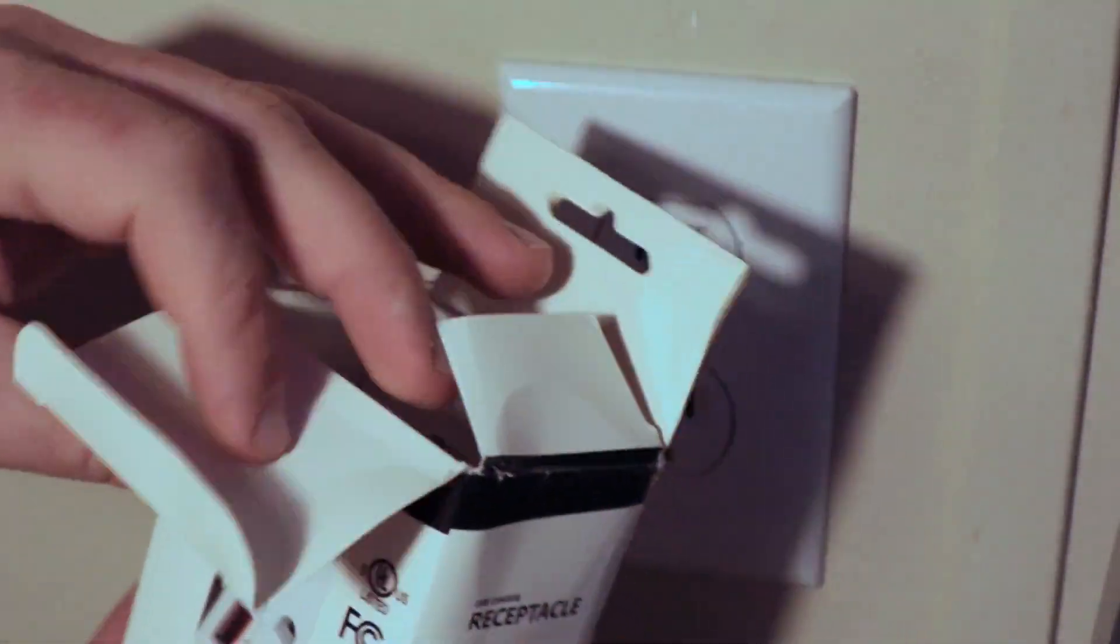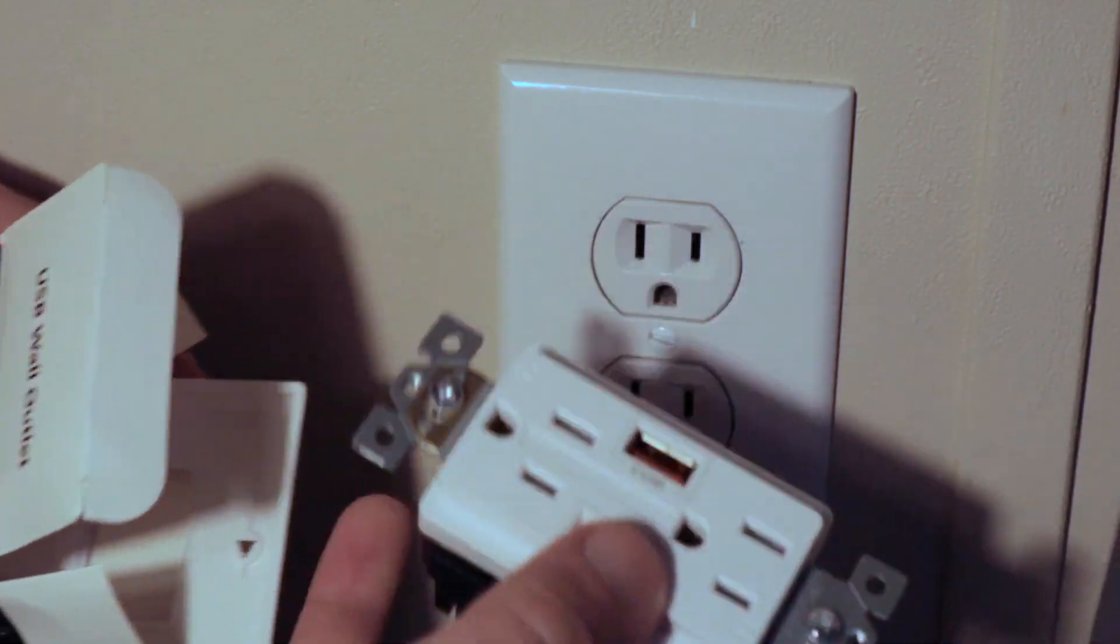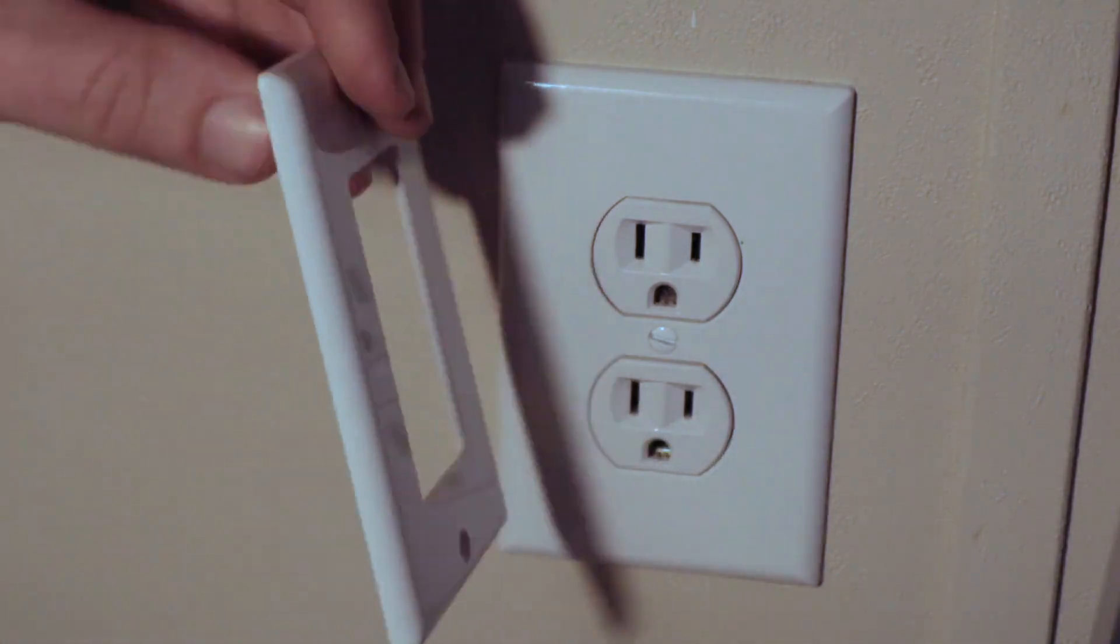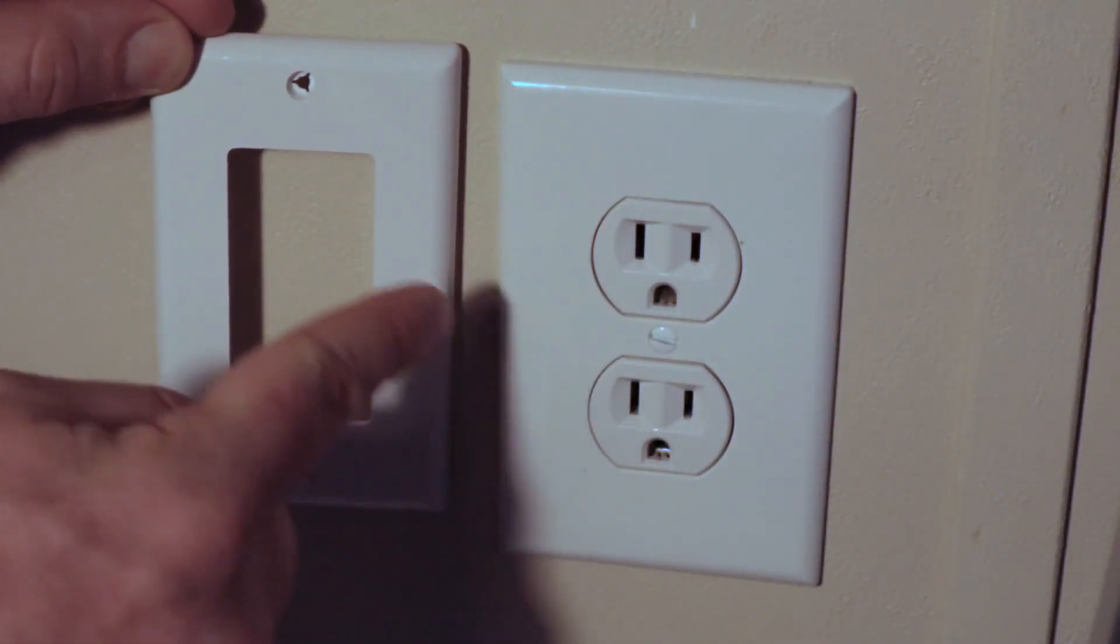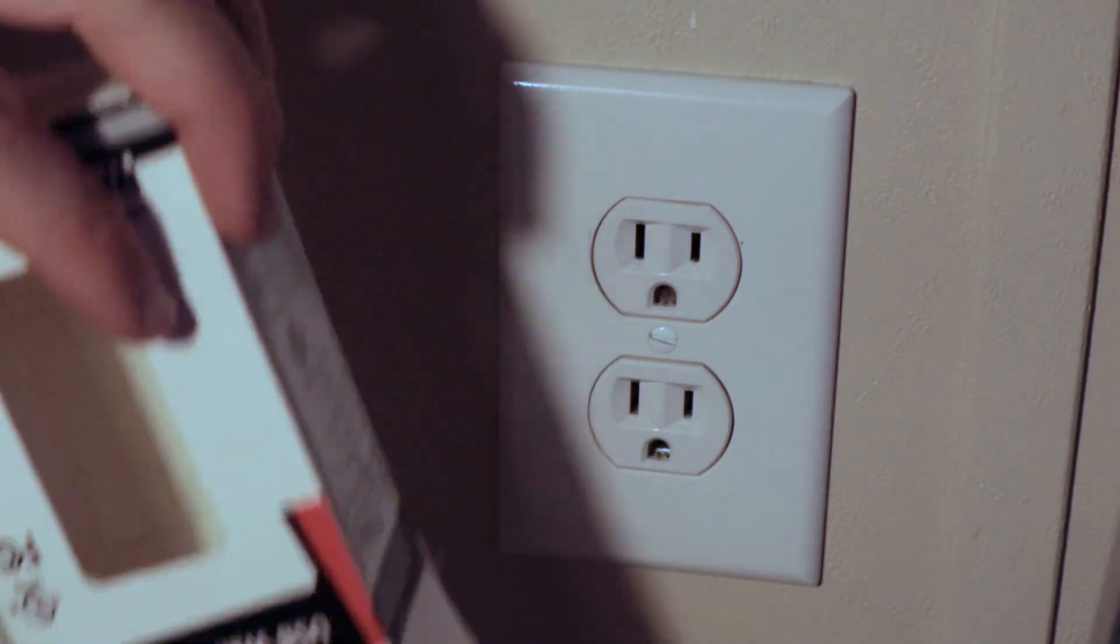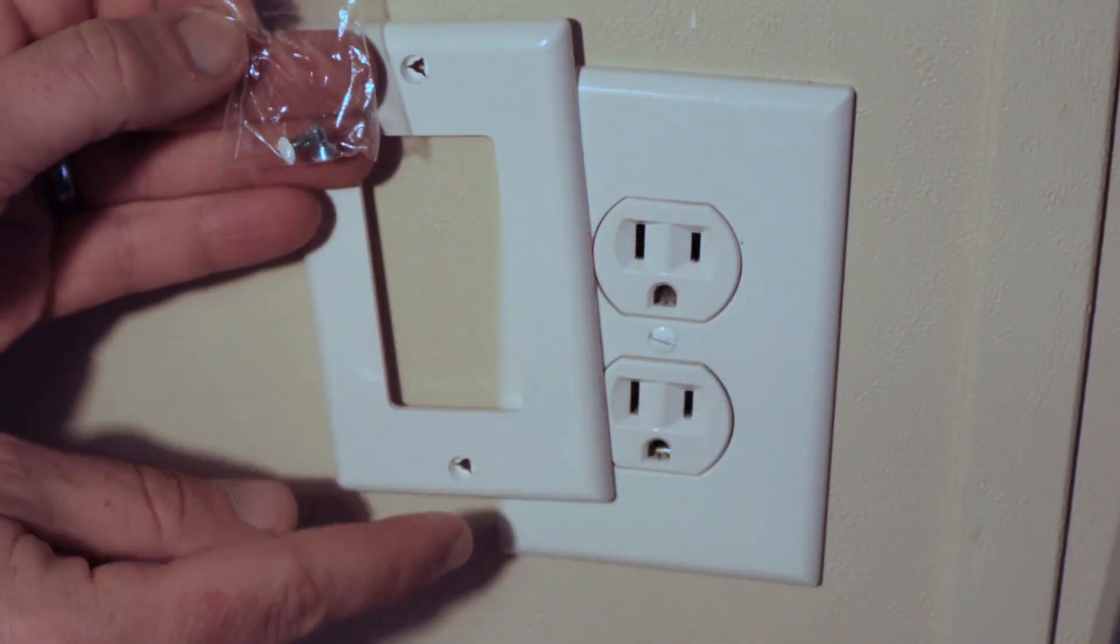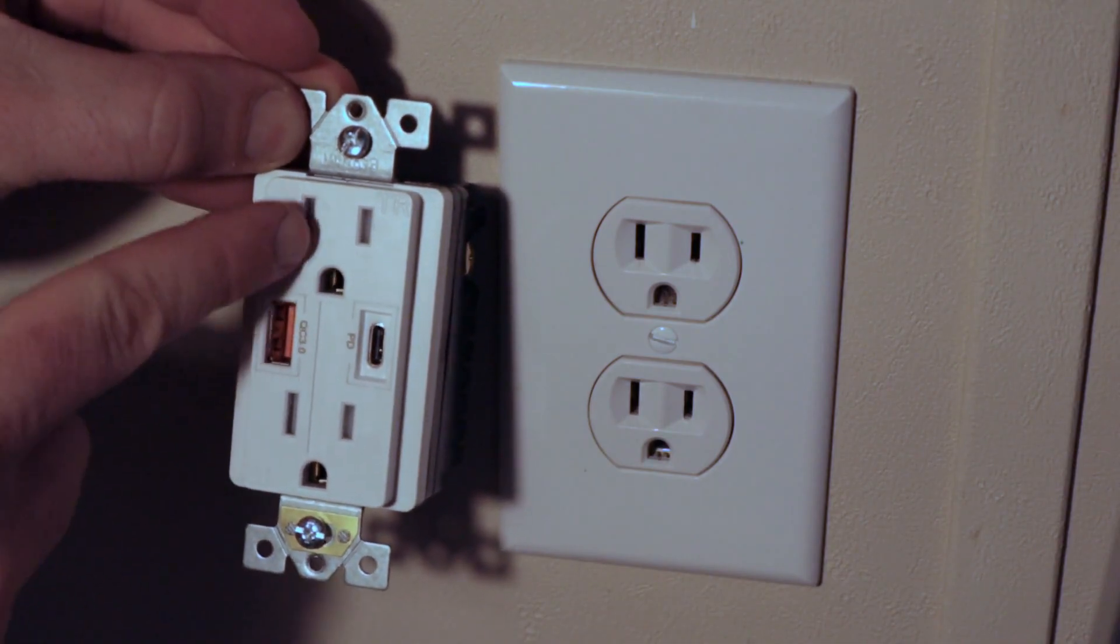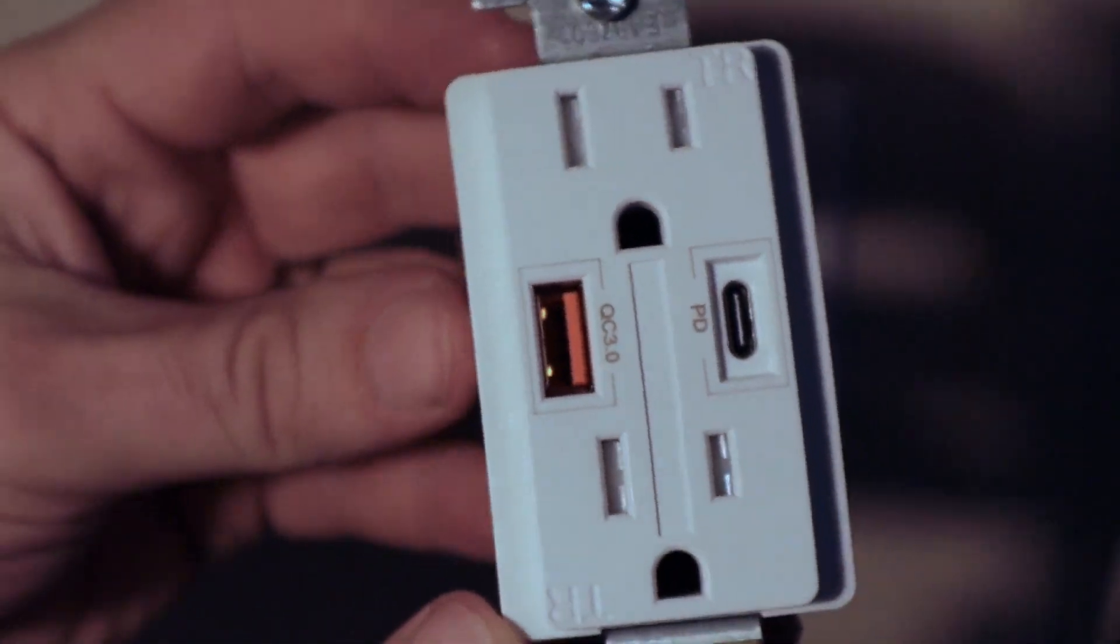It's available on Amazon for around $30 and included is the device. They also have good instructions in English and also a white cover plate, which is good for me because it's a different style plate as you can see. It also includes white screws for installing the cover plate. The device is nice. It has a QC 3.0 charging port for quick charging and also has a USB type C charging port for charging things like modern cell phones.